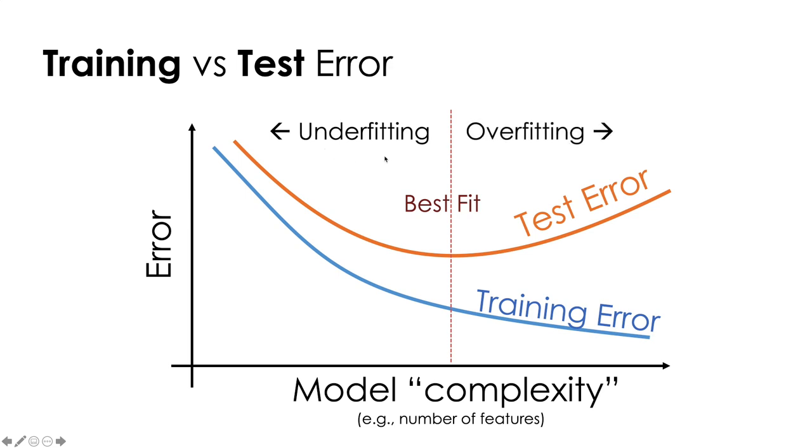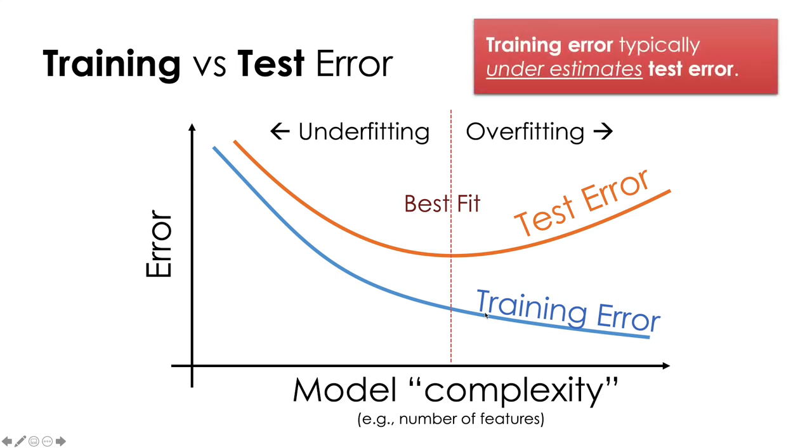Anything to the left, we're underfitting. There's more opportunity to exploit structure in the data that we're not yet capturing. To the right, our test error is going up because our model has gotten so complex that it's starting to fit the noise and trying to generalize the noise to new problems. As I noted earlier, it is typically the case that the training error is going to underestimate the test error.